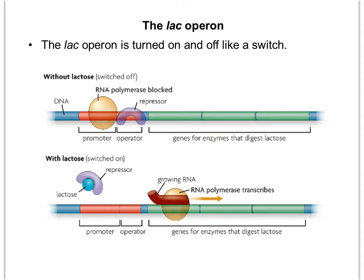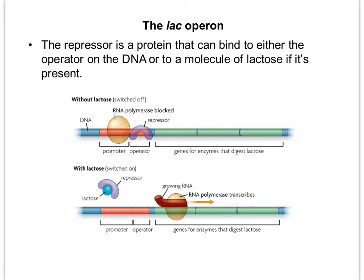The lac operon can turn on and off like a switch. The repressor can bind to one of two things: it can either bind to the operator on the DNA, or to a molecule of lactose if it's present. The repressor has a preference to bind to lactose, so given the choice between lactose and the operator, the repressor is going to bind to lactose.